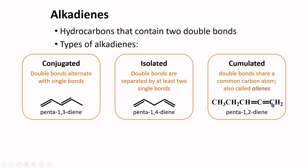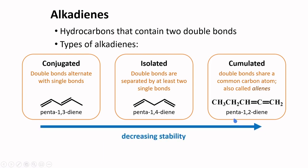This terminal carbon is sp2 hybridized, the central carbon is sp hybridized, and the other terminal carbon is sp2 hybridized. This compound can be named as penta-1,2-diene. The stability follows a decreasing order from conjugated to isolated to cumulated alkadienes.